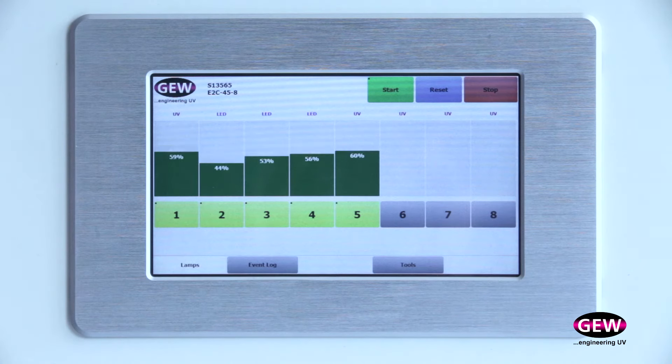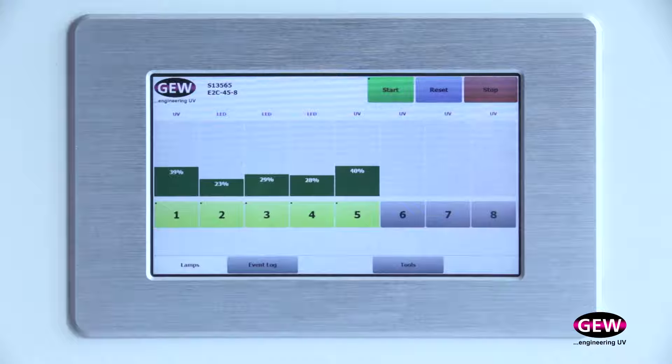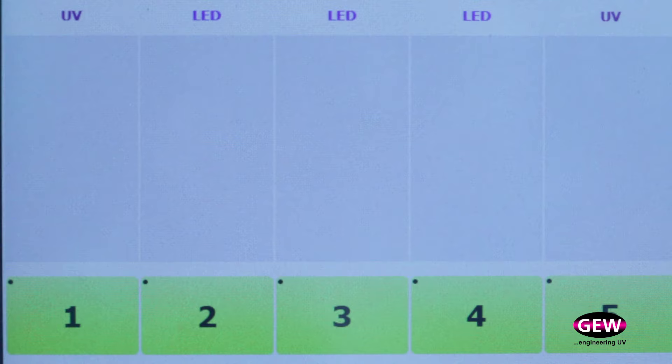When the press slows down and stops, the lamp power reduces then returns to the standby level and the shutters close to protect the substrate from UV and heat radiation.